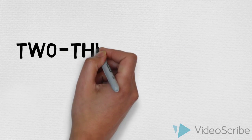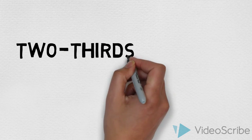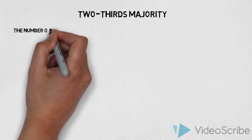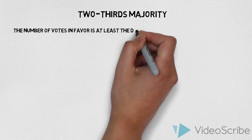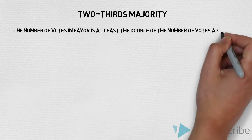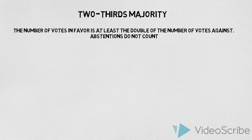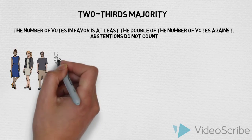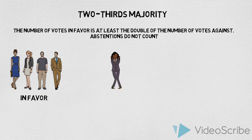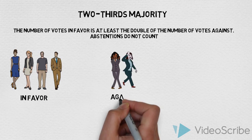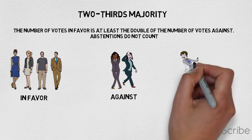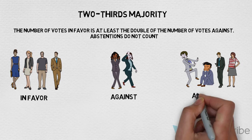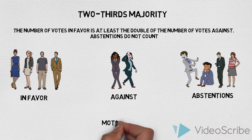Two-thirds majority: the number of votes in favor must be at least double the number of votes against, and abstentions do not count. Here there are four in favor and two against; abstentions do not count, so the motion passes.